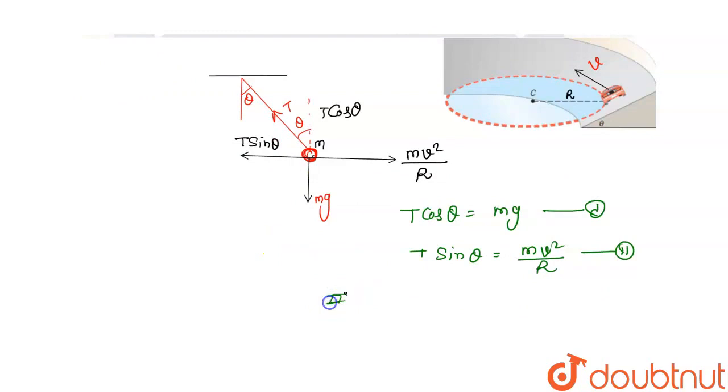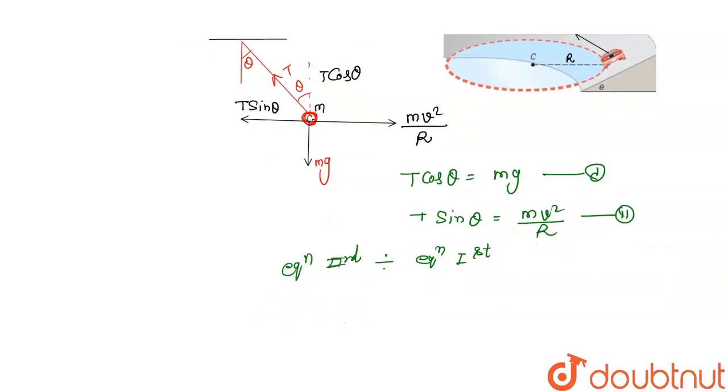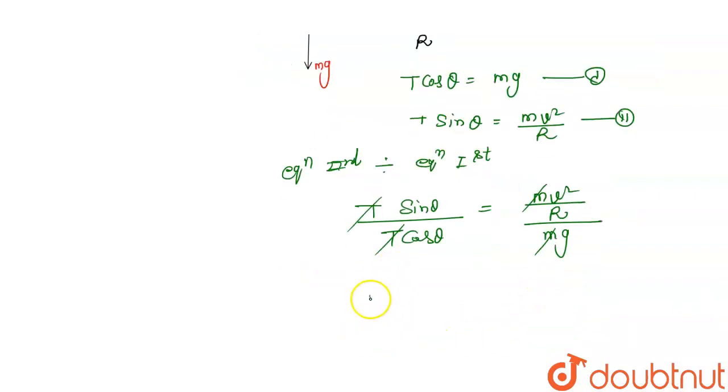Dividing the second equation by the first equation, m cancels out and T cancels out. Then tan theta, which is sin theta by cos theta, equals v² divided by Rg.